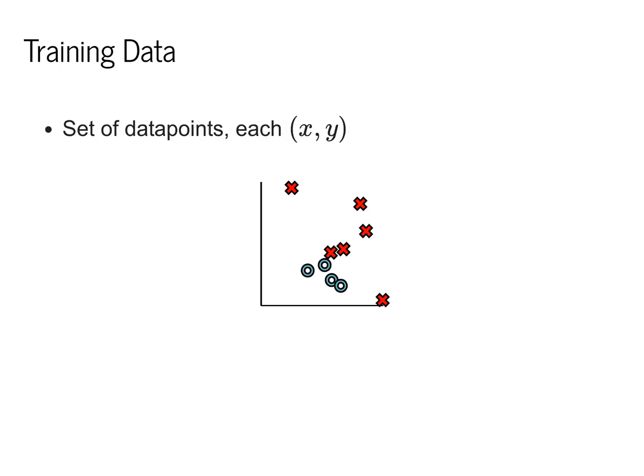We start with a whole training dataset that corresponds to a bunch of these data points. Each data point has its location in space x, as well as its true label y. We're going to be working with these very simple datasets to start with.